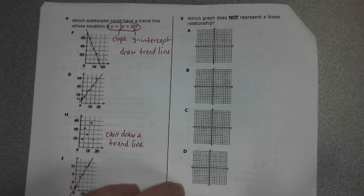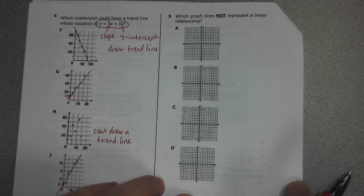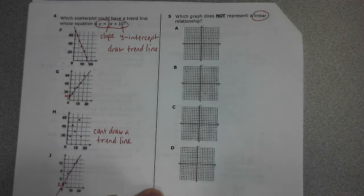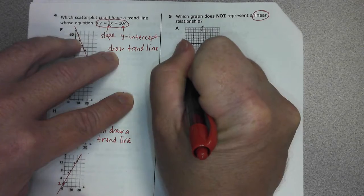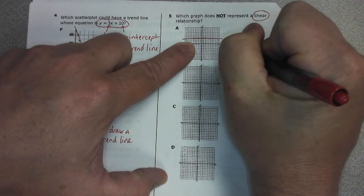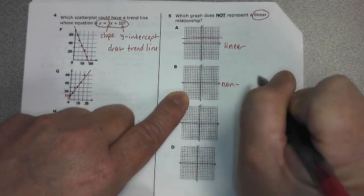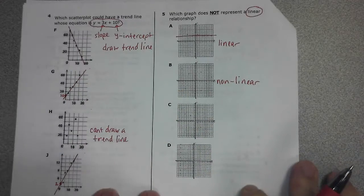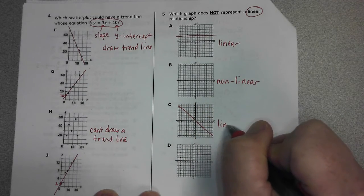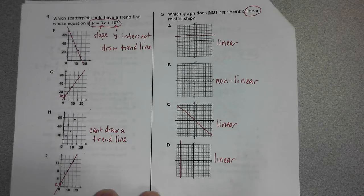I'm not going to circle the correct answer because I want you to listen to the entire tutorial video — I don't want you to just fast forward to find the correct answers. Number five: which graph does not represent a linear relationship? 'Linear' means line. Answer A is linear, B's points are scattered so it's non-linear, C and D can both have trend lines so they are linear. The answer is B.